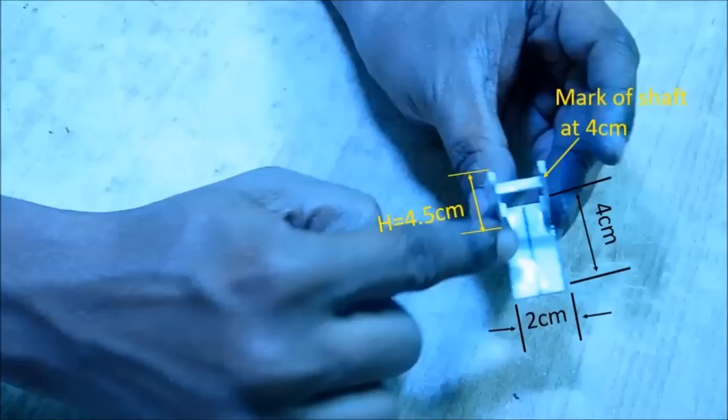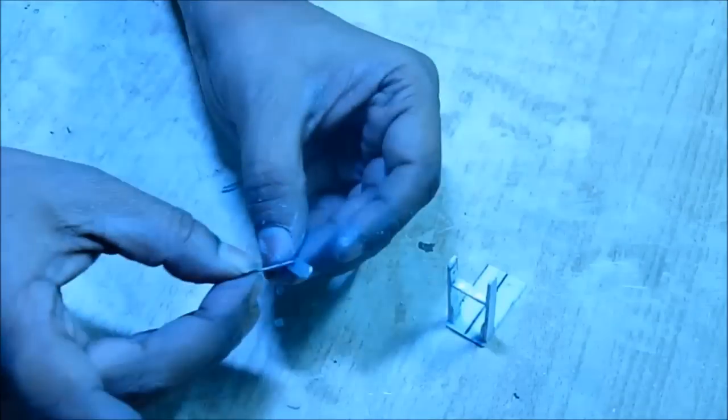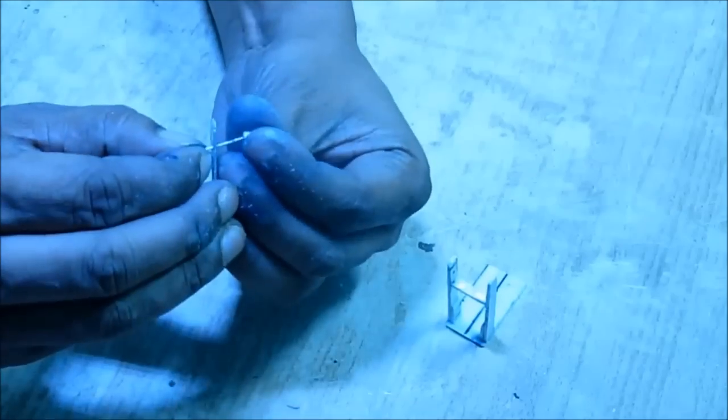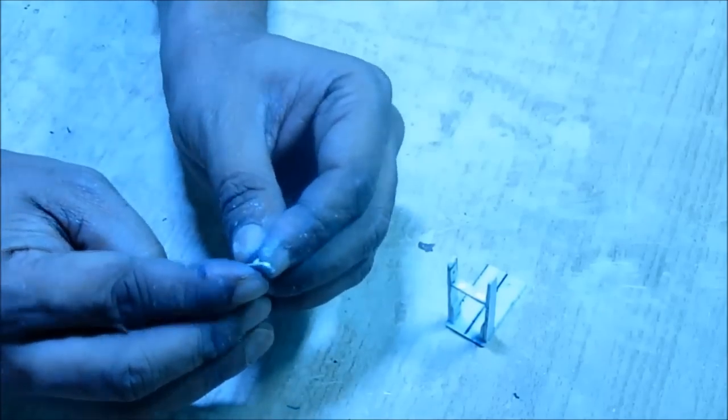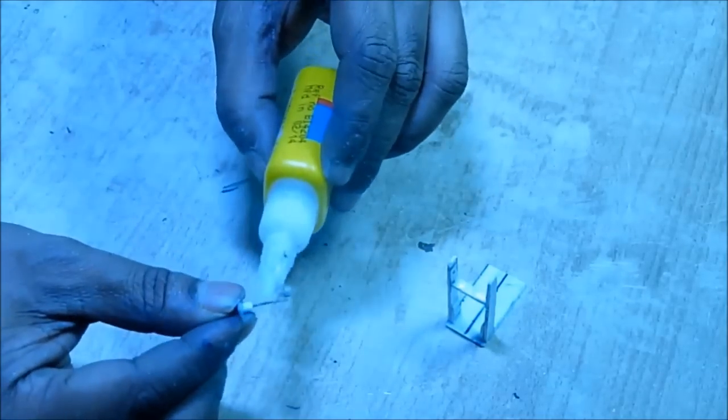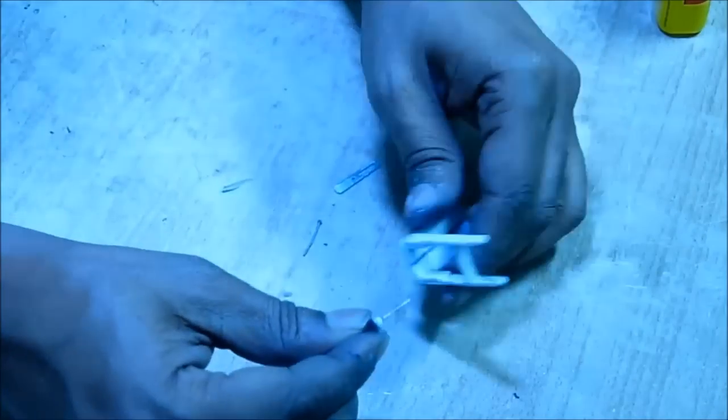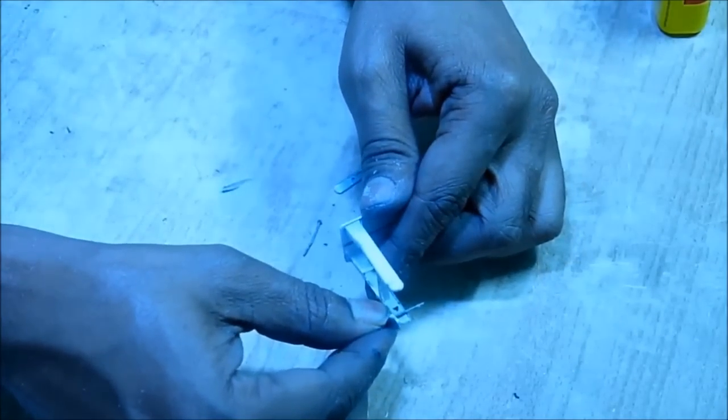Take one wing shaft, pass a pin through the hole, put a small piece of pipe and glue it at the mark where the shaft mark was given like that. I have glued both.